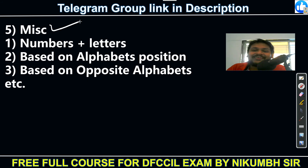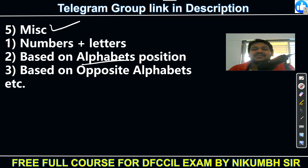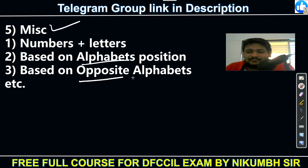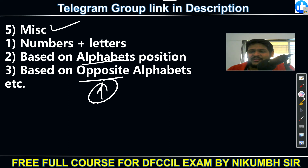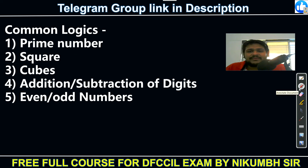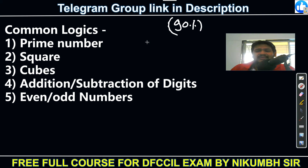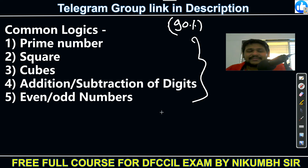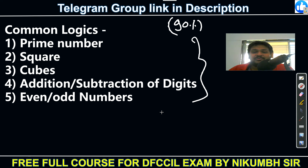The fifth type is miscellaneous. Here they can frame any type of question — numbers plus letter combinations, alphabets only, or opposite alphabets similar to coding-decoding. Lots of question varieties can appear here to trick you. About 10% of questions are meant to be skipped — don't attempt them. I will explain further how to identify whether to skip a question or not.